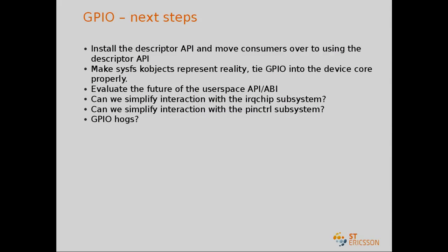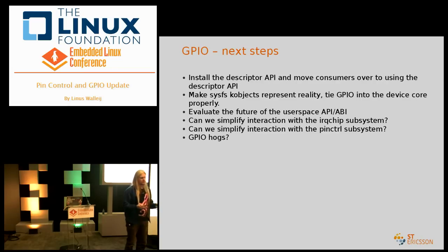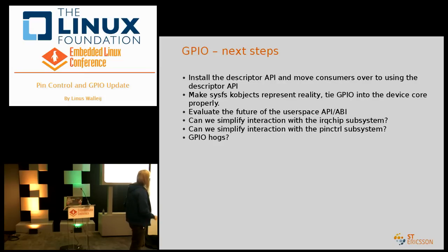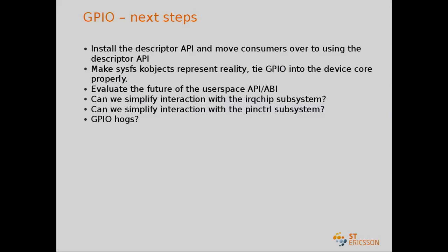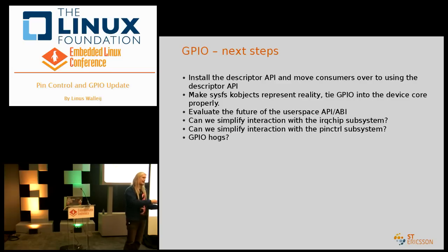What's going to happen next in the GPIO subsystem: we'll get the Descriptor API in place, then all drivers will have to include a file called linux/gpiod.h or something like that and do real requests, reference their GPIOs from the devices, and couple the resources so that GPIOs are tied to their devices in the device model. Then, the SysFS kobject — if you look at the code, what the GPIO subsystem does to get handles in SysFS is that it creates a dummy device and attaches the SysFS files to it. It doesn't attach to the actual GPIO controller because it's not really a device — that needs to be fixed.